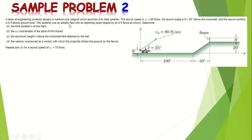We are asked to determine: (a) the time duration TF of the flight — how long will the eight-pound steel sphere fly until it reaches the ground; (b) the x-y coordinates of the point of first impact; (c) the maximum height h above the horizontal field attained by the ball; (d) the velocity expressed as a vector with which the projectile strikes the ground or the fence; and then repeat part (b) for a launch speed of 75 feet per second.